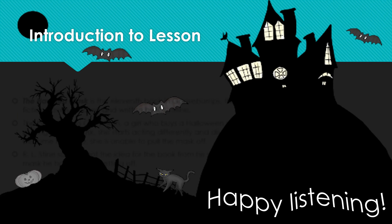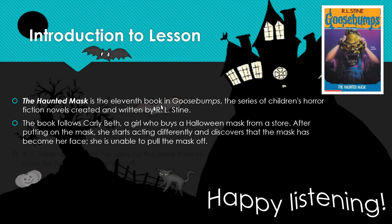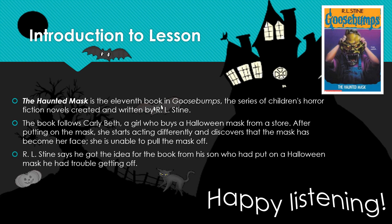That's it for all the skills covered this week for comprehension. Let's look into what we're reading today. We're going to be reading from the Goosebumps series — The Haunted Mask, the 11th book in the series of children's horror fiction novels created and written by R.L. Stine. The book follows Carly Beth, a girl who buys a Halloween mask from a store. After putting on the mask, she starts acting differently and discovers that the mask has become her face and she's unable to pull it off. You're only going to be reading the first part — an excerpt. This week we're going to be listening and trying to improve our listening skills, so it will be a recording of a person reading the chapter to you. R.L. Stine got the idea from his son who had put on a Halloween mask he had trouble getting off. Happy listening!